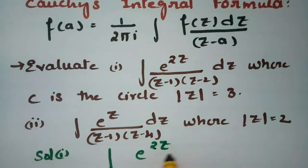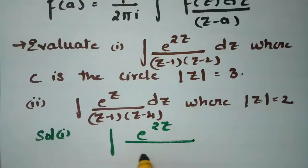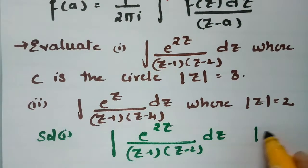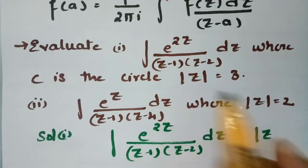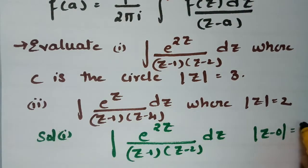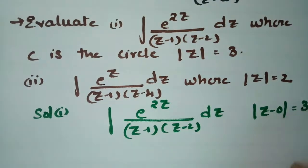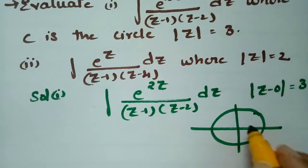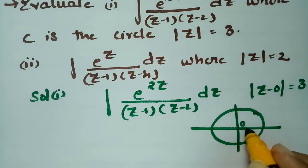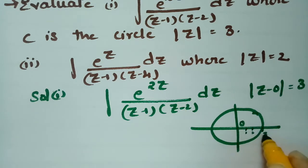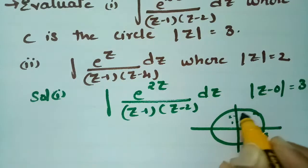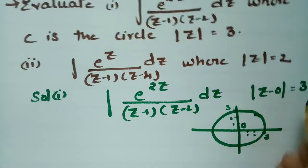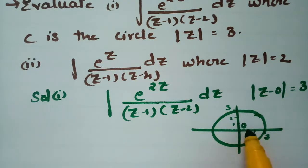For solution 1, we have to integrate e^(2z) / [(z-1)(z-2)] dz, where c is the circle. Here |z| = |z - 0| = 3, so 0 is the center and 3 is the radius. On the number line: 0, 1, 2, and 3 are marked, with the circle having radius 3 and center 0.